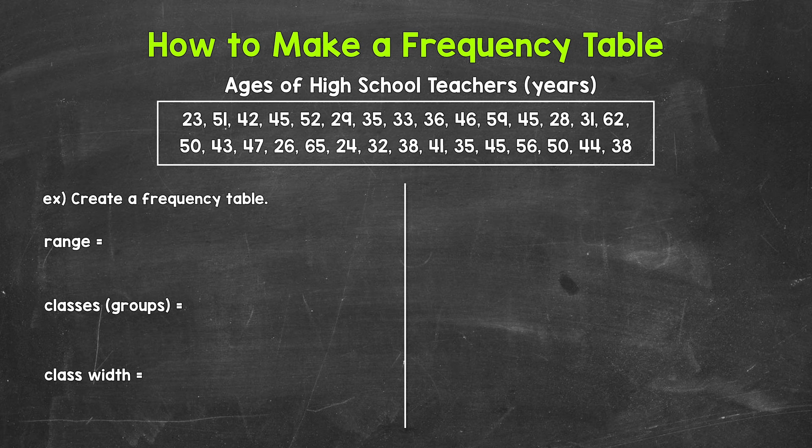The highest number in value is 65, and then the lowest number in value is 23. So the oldest teacher is 65 and the youngest teacher is 23. Let's find the difference. So we need to subtract. So let's do 65 minus 23. 65 minus 23 gives us a range of 42.